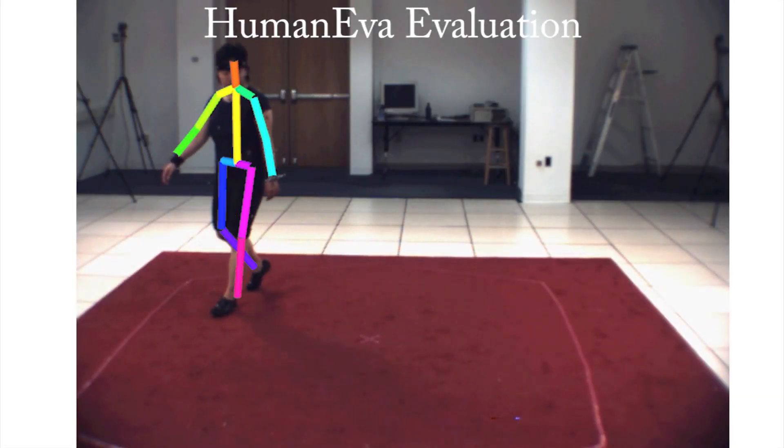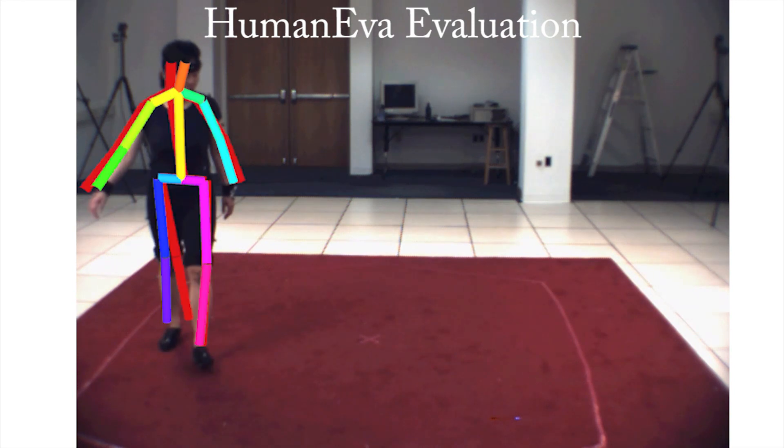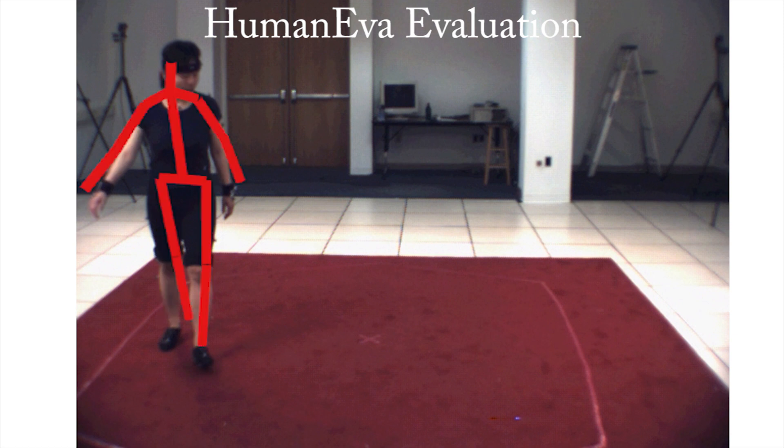Without perspective correction, marked in red, the global orientation is erroneous. After the correction, our results, shown as colored, are close to the ground truth.